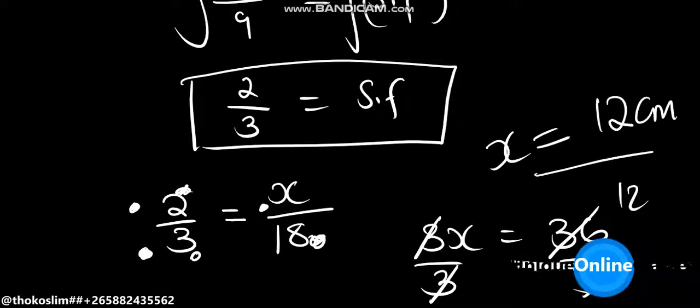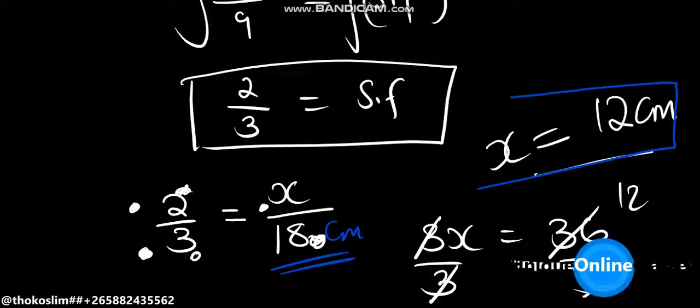So the value of x is 12 cm. The answer should be in cm because radius is measured in cm. This is the answer — the radius of the smaller circle is 12 cm.